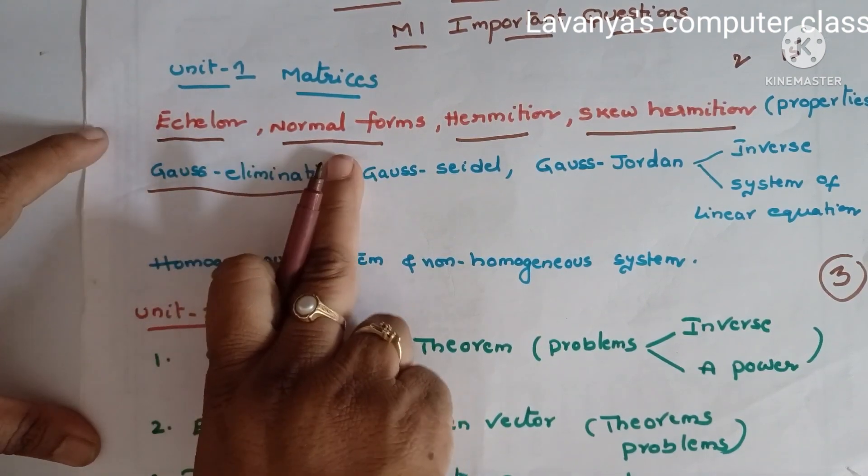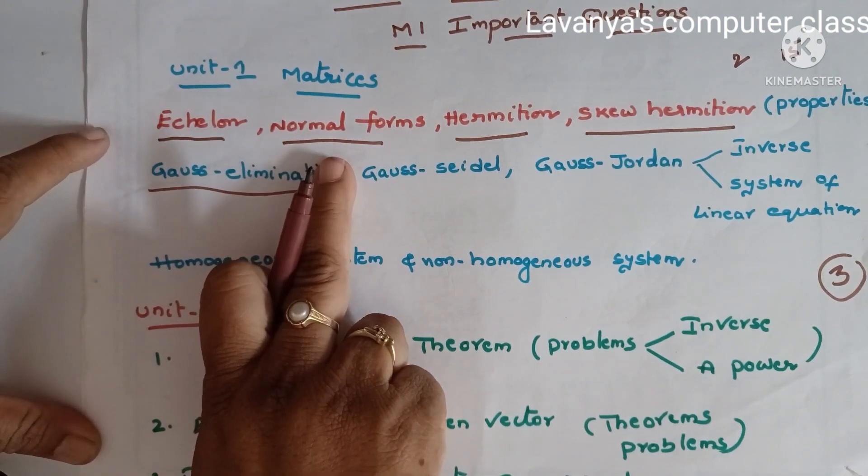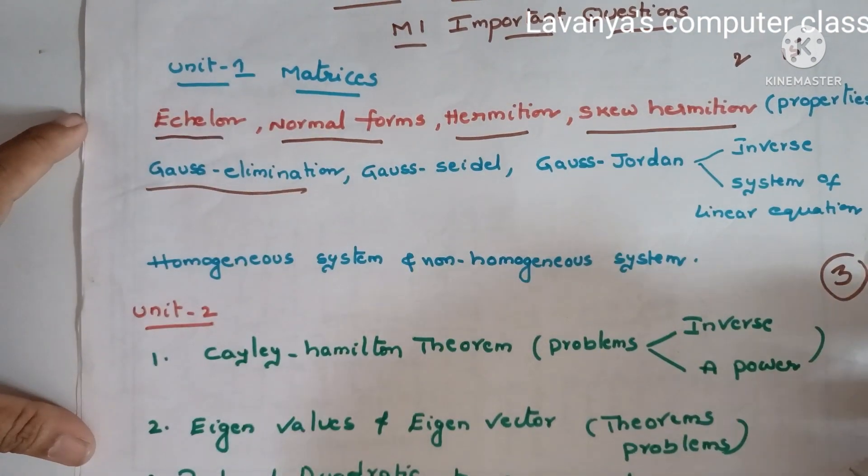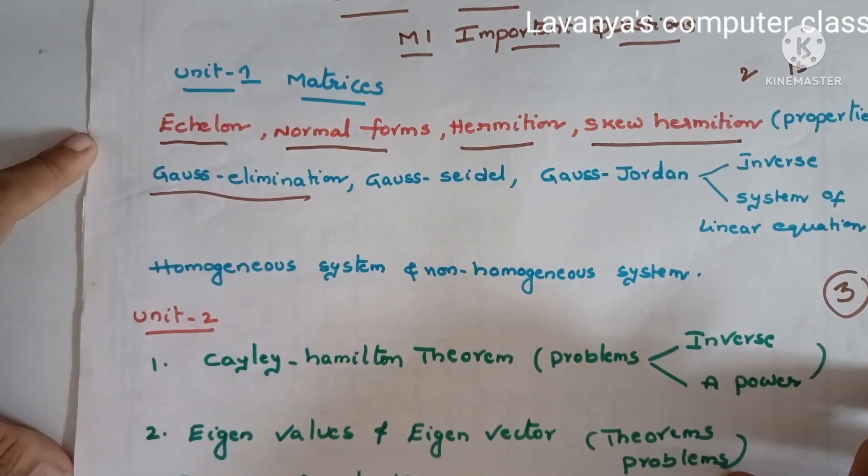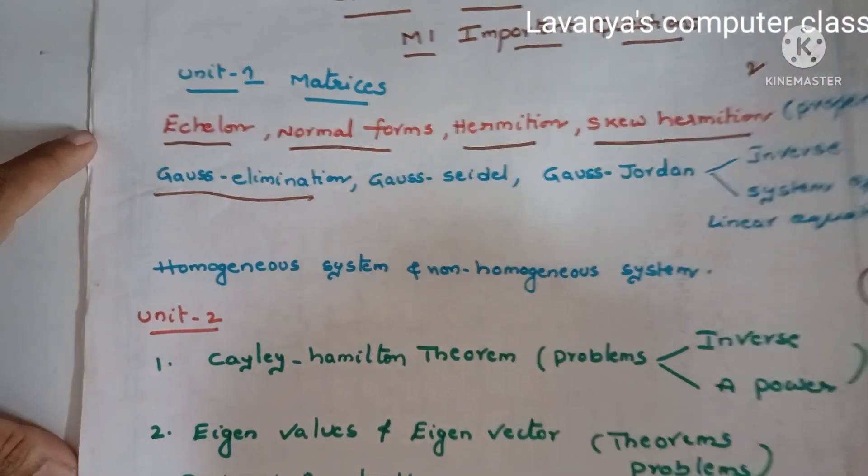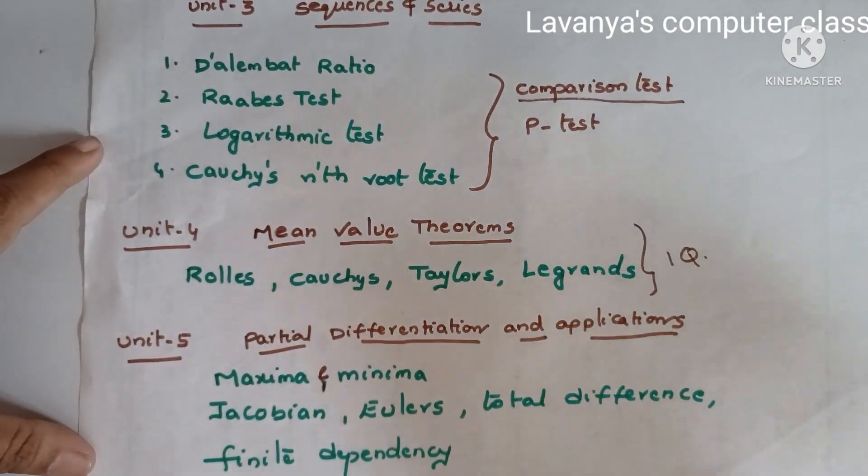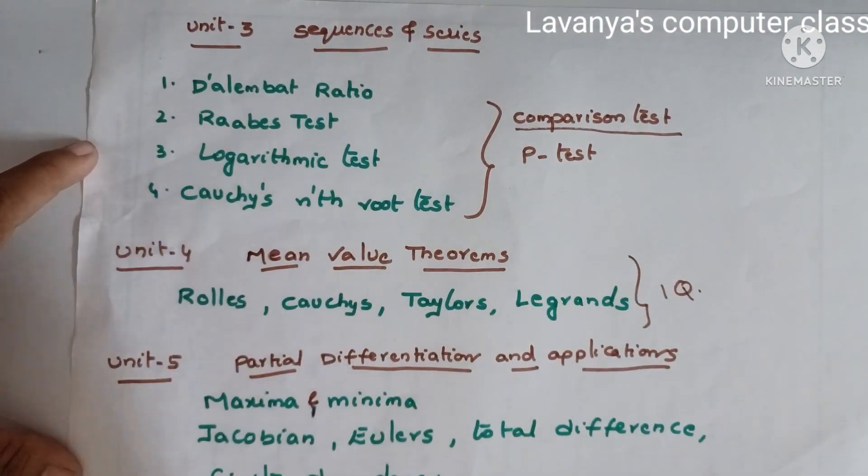Whatever the lines are edited in the red pen, those are very important questions. At least one or two questions are coming from these topics. So these are the important questions. M1, read well and write well. Thank you for watching my video. Subscribe my channel, share it to your friends, and thank you.